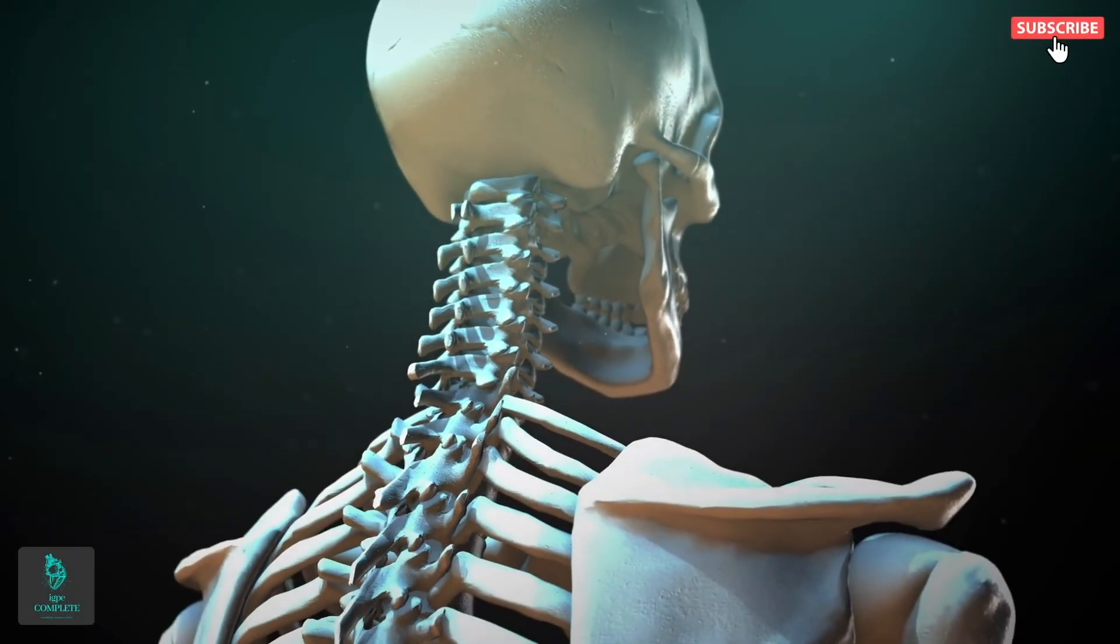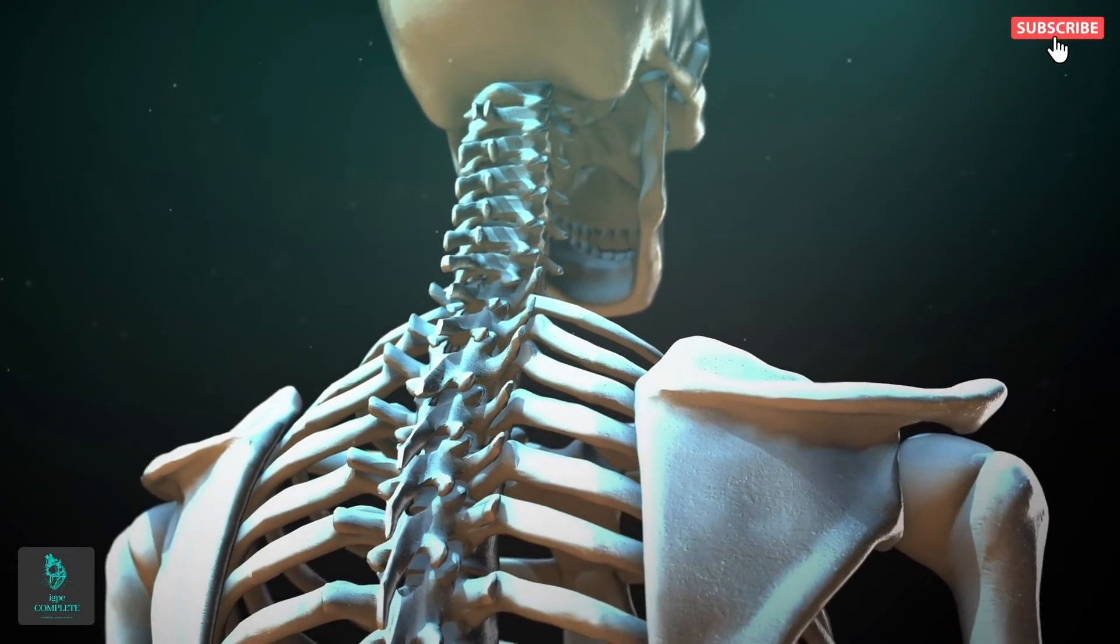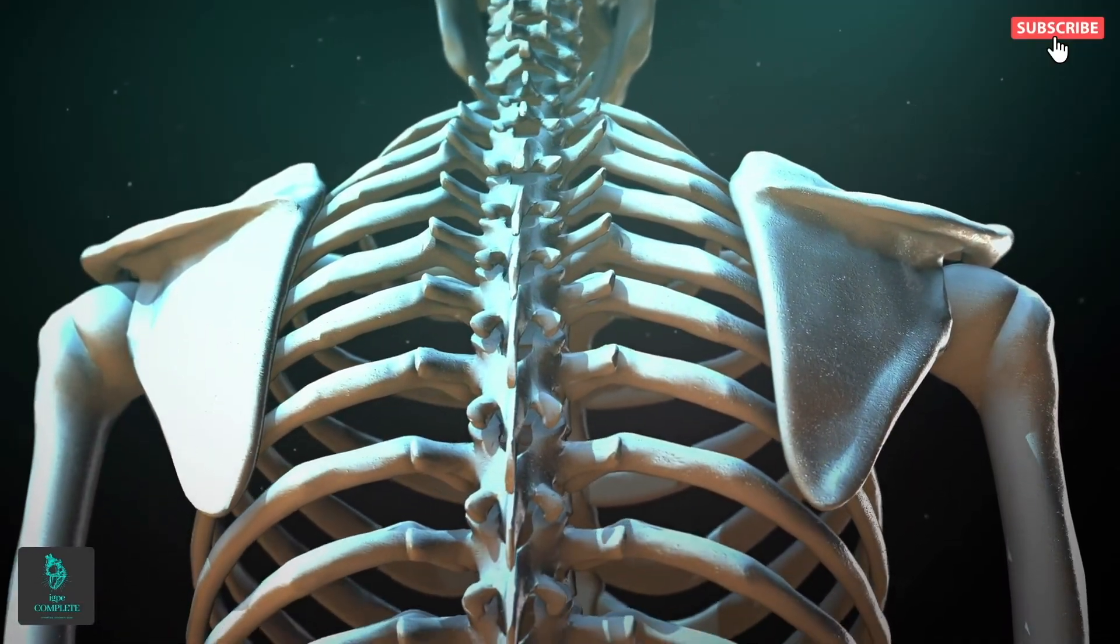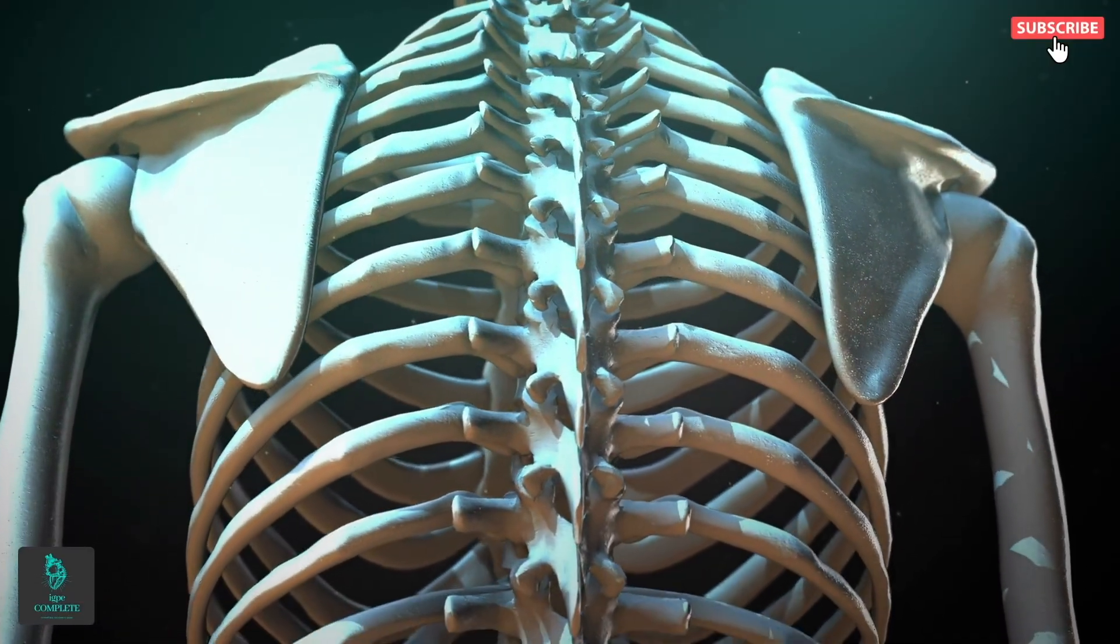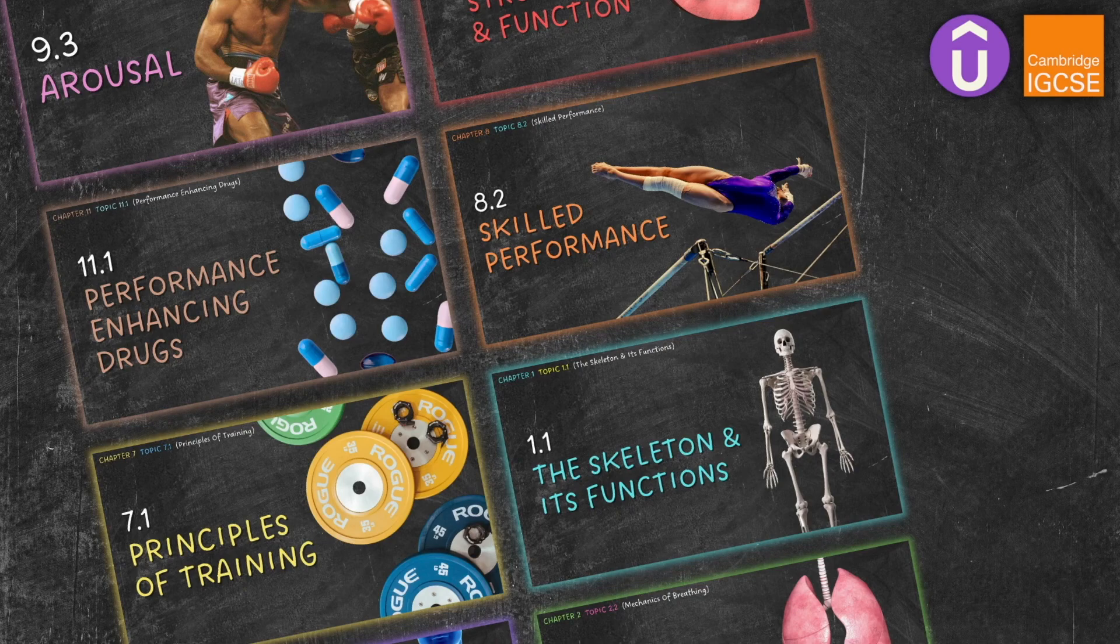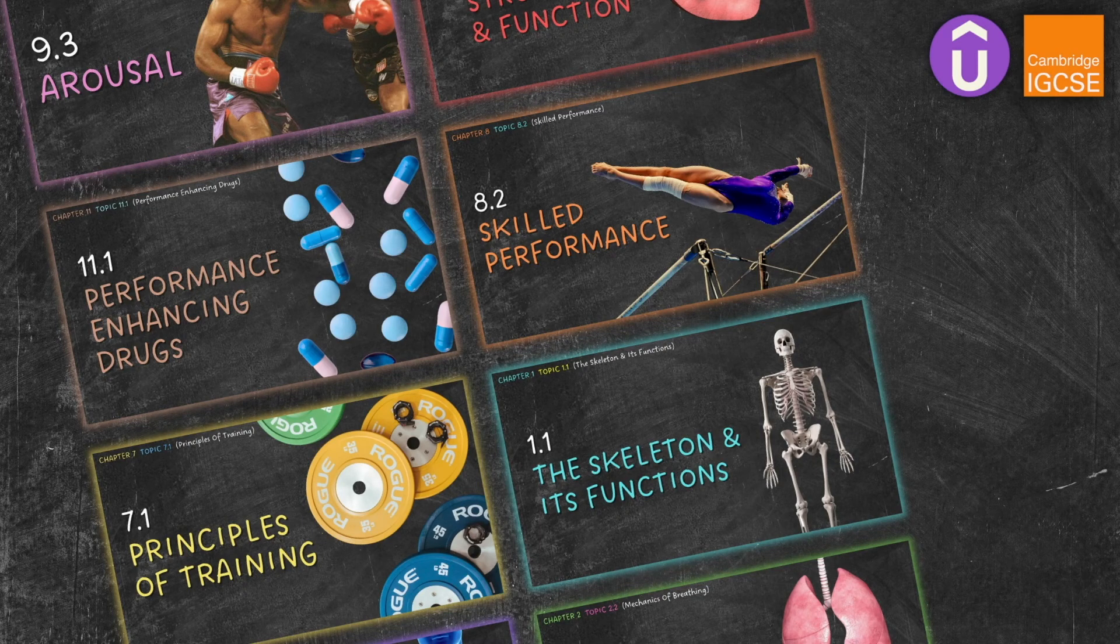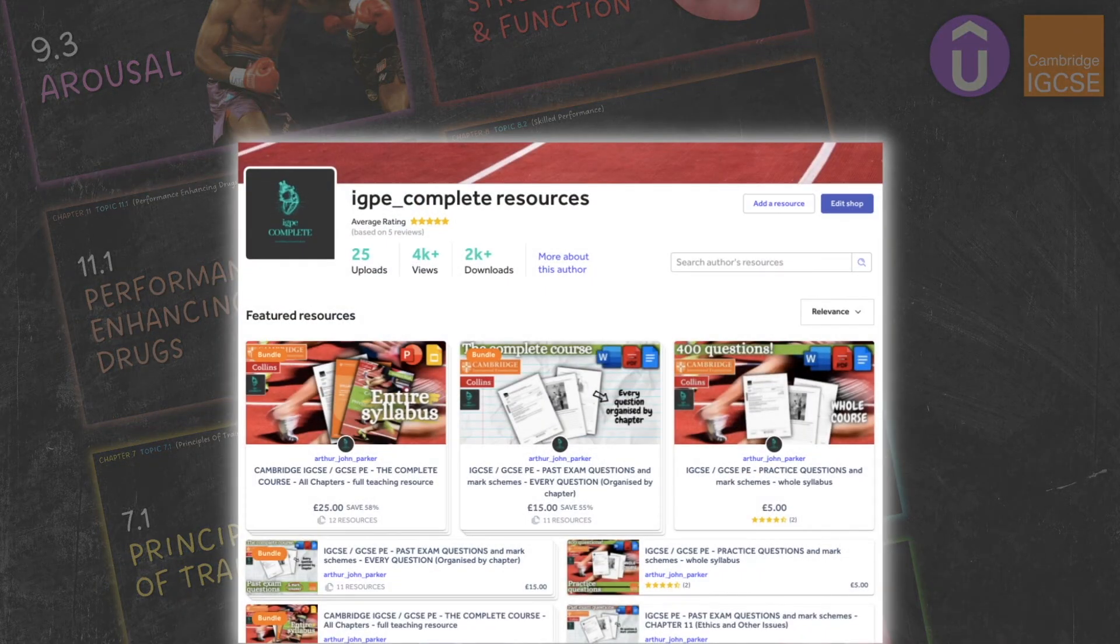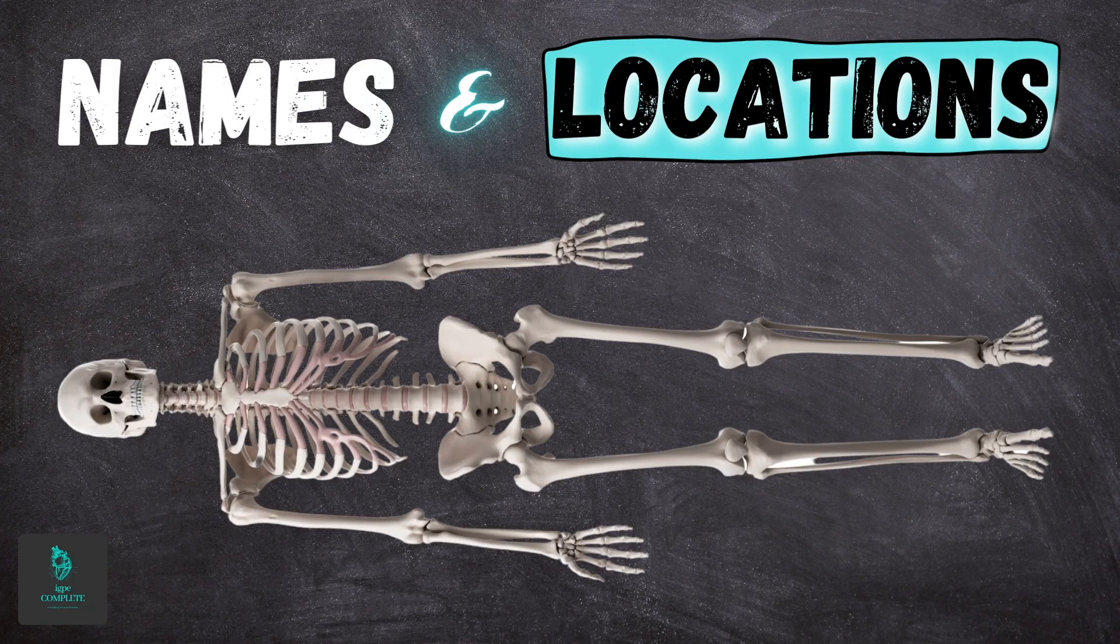So there we have it, a brief rundown of the names, locations, and functions of the major bones. If you have any questions, feel free to write them in the comments section, and if you're a GCSE PE student or teacher, you can find links in the description to the complete exam revision course on Udemy and my resource store, which contains everything you need to teach the entire Cambridge syllabus from scratch, regardless of experience. Thanks for watching, and I'll see you in the next one.